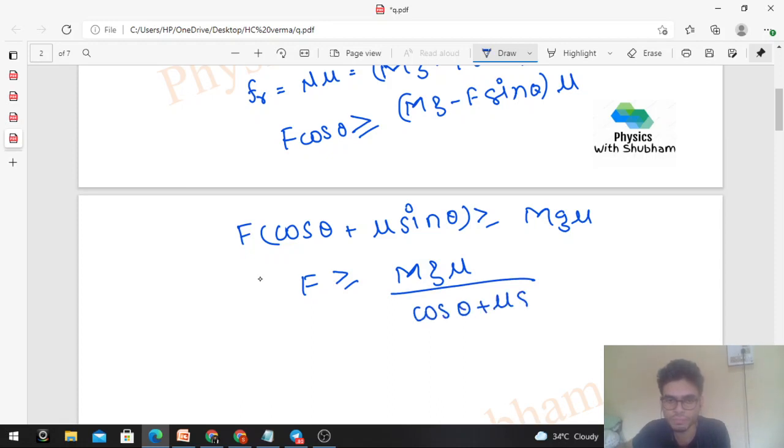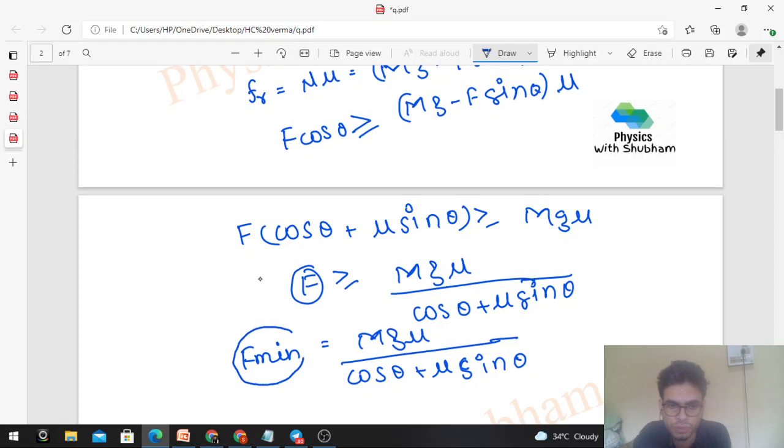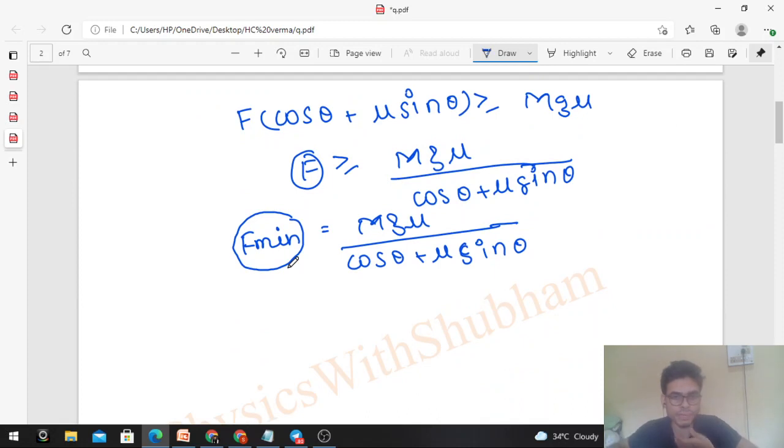From here we are getting F should be greater than or equal to mg μ divided by (cos θ + μ sin θ). Now we have to find the minimum value. So F minimum will be mg μ divided by (cos θ + μ sin θ) when you apply a force in a given particular direction. But you see, this depends on θ, so we have to find out the θ also.